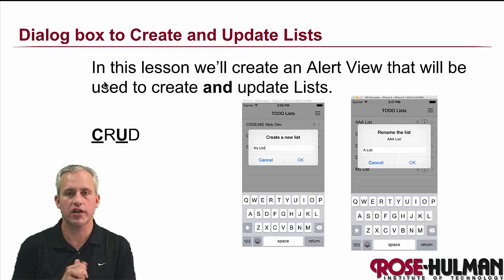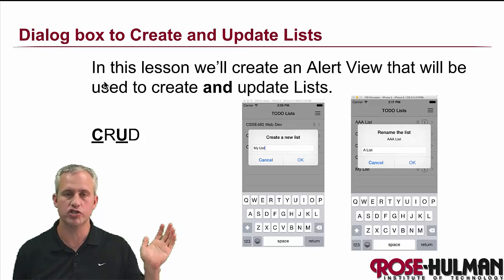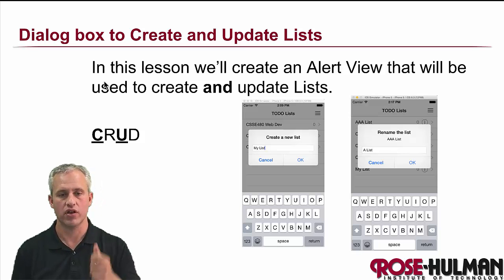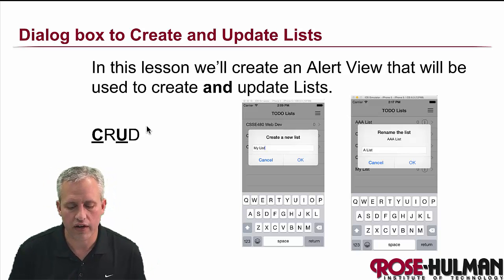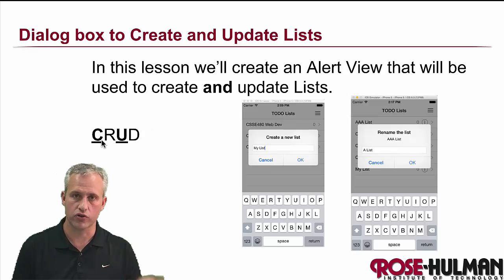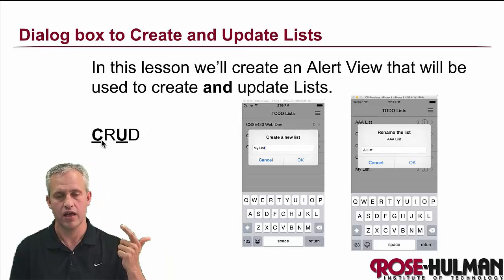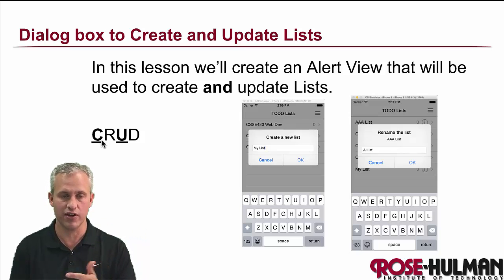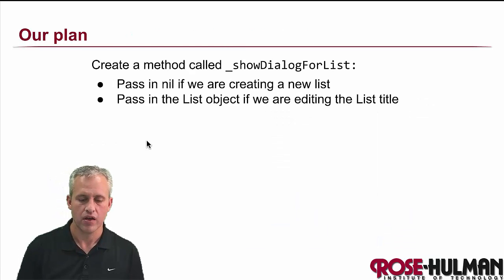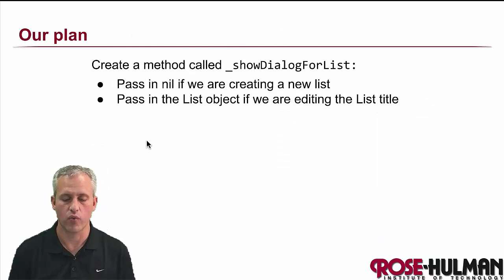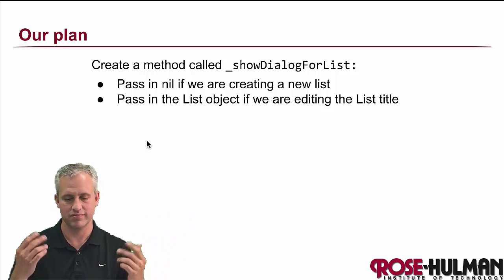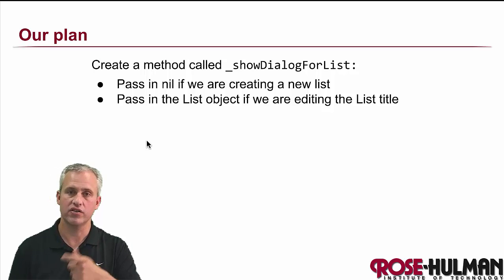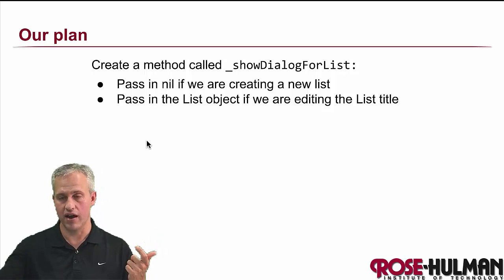Welcome back. We're going to work on making a dialog to create a list. We're going to use this dialog for two reasons: we'll use it for creating a list, and we're also going to implement it in the same video to update a list as well. Our strategy is to make a method called show dialog for a list. iOS doesn't use the keyword 'dialog' — that's an Android word — but it's what I'm calling it. The idea is if we pass in nil, it's going to be a create; if we pass in an actual list, it's going to be an update.